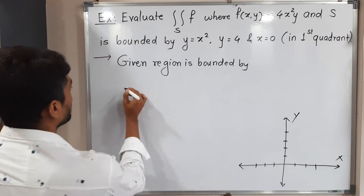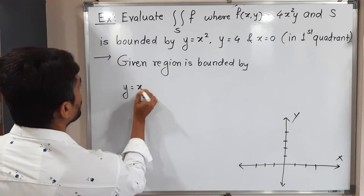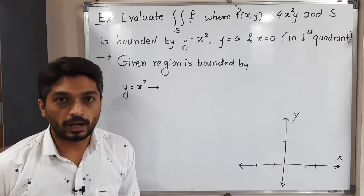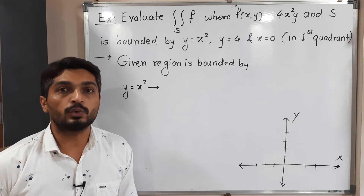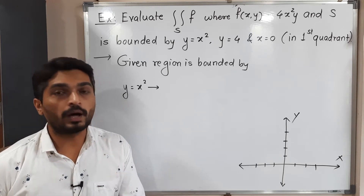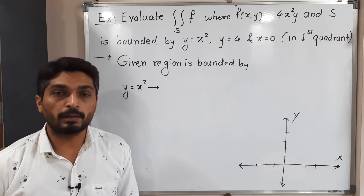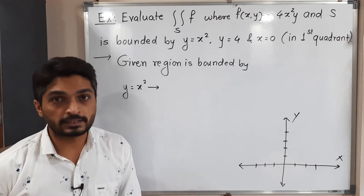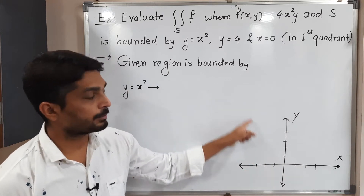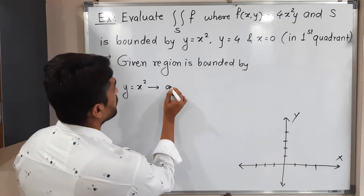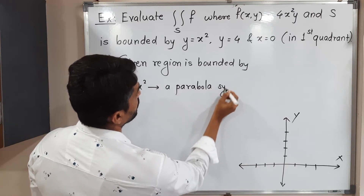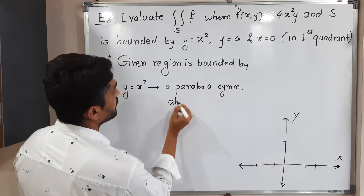The given region is bounded by y equals x squared. When you have an equation where the power of one variable is 1 and the power of the second variable is 2, it is 100% a parabola. The power of y is 1, so this parabola is symmetric about the y-axis, and since y has a plus sign, the parabola is symmetric about the positive y-axis.